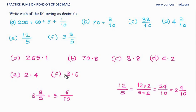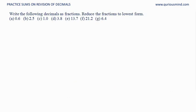Let's do the next one. Write the following decimals as fractions. Reduce the fractions to lowest form. Let's do the first one, 0.6 as a fraction. This is in the 10th place. 6 digit is in the 10th place, so that is equal to 6 tenths. Now let's reduce it in the lowest form. The common factor is 2 and that gives me 3 upon 5.